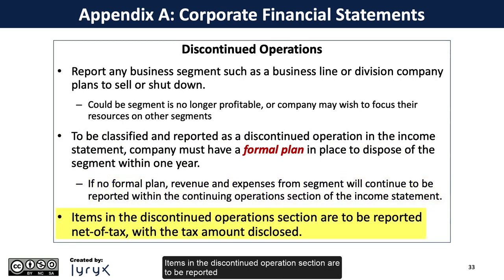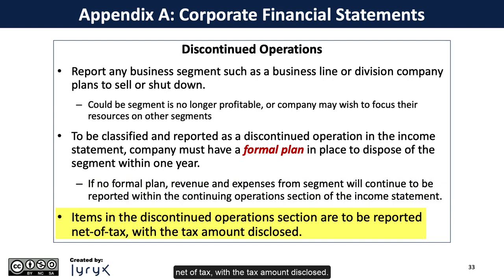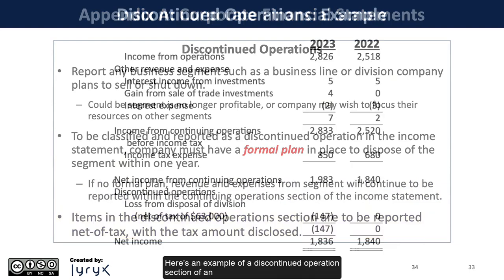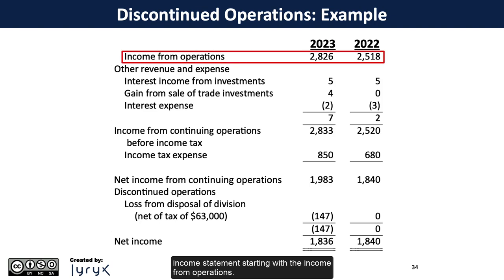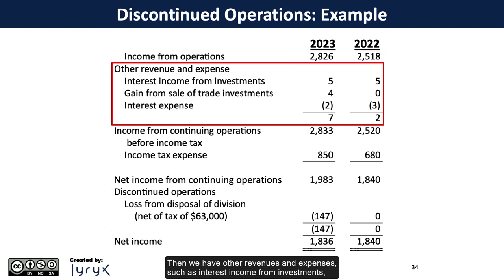Items in the discontinued operations section are to be reported net of tax, with the tax amount disclosed. Here's an example of a discontinued operations section of an income statement, starting with the income from operations. Then we have other revenues and expenses, such as interest income from investments, gains from the sale of trade investments, and interest expense.